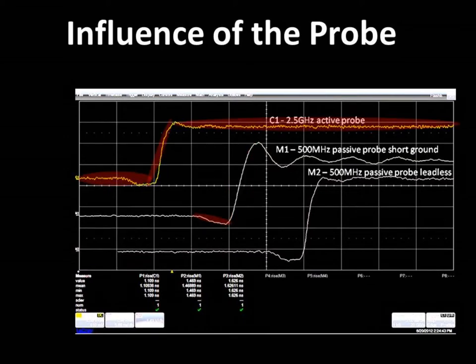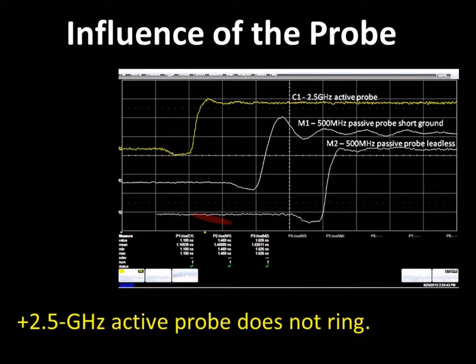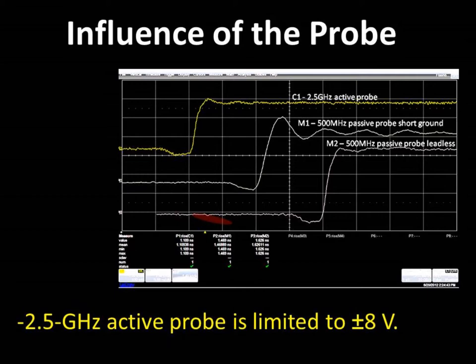Finally, when we look at the 2.5 GHz active probe, we see that it does not ring at all and offers sufficient bandwidth. This probe also offers very low capacitance, greatly reducing the sensitivity of ground leads and traces. However, this probe is limited to plus or minus 8 volts, with a plus or minus 12 volt offset, and like most active probes, is expensive.